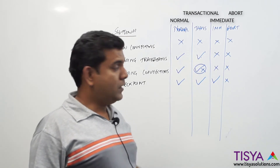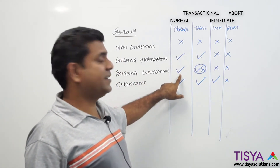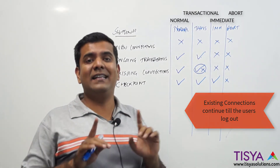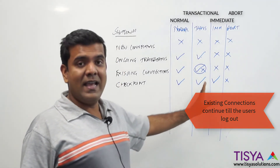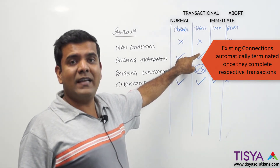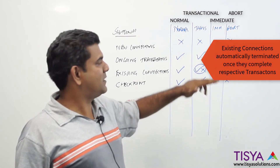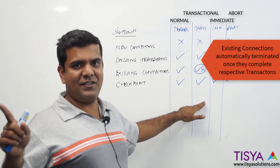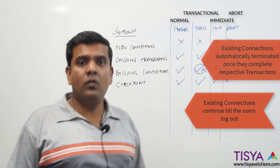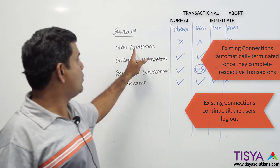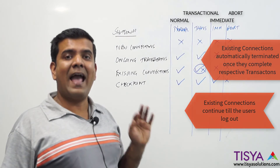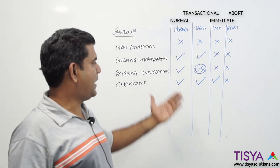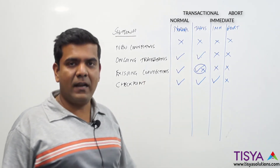With a shutdown normal, existing connections continue to exist, so the database will not shut down if there are any existing connections — users have to exit explicitly. In a transactional shutdown, users continue with their transactions, and whenever a user issues a commit or rollback, that statement is processed and their session is immediately terminated. The database waits for all users to complete their current transactions, automatically terminates them, and shuts down. In a normal shutdown, users can continue to work, no new connections are allowed, but existing sessions can continue. Once all users have exited, a checkpoint is done and the database is shut down.